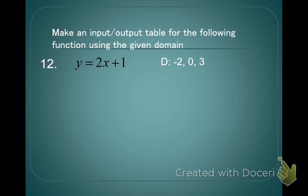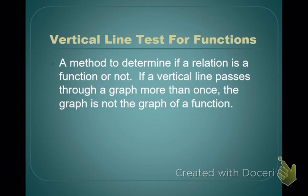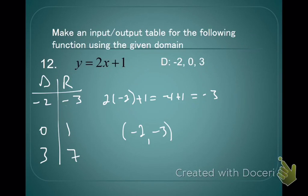Now try number 12. See what range values you get to go with these domain values. Did you get negative 3, 1, and 7 for your range? We're literally just plugging these domain values in for x. Notice how we're always plugging in for x — we never plug anything in for y. We just work on the right-hand side, plugging in for x and doing the arithmetic using order of operations.